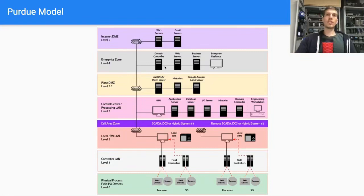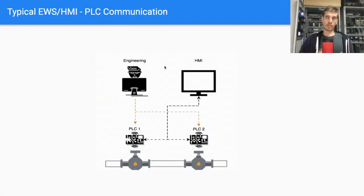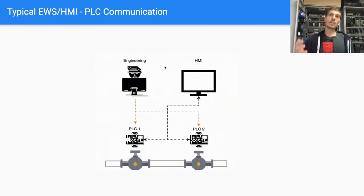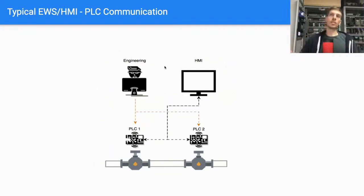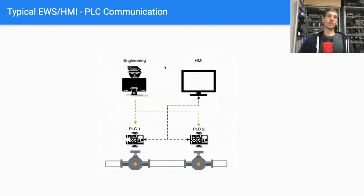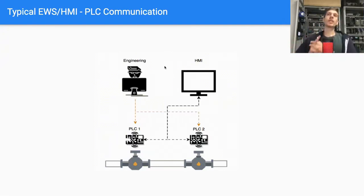If we take the Purdue model to be very concise, we can see here just the engineering station and HMI communicating and interacting with PLCs, and the PLCs are connected to valves in this example — doing something physical in our world. The engineering station is meant for programming and configuration mostly, while the HMI is mostly for data acquisition and for the engineers to understand what's going on within the process.